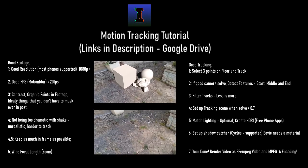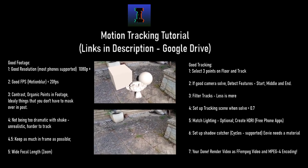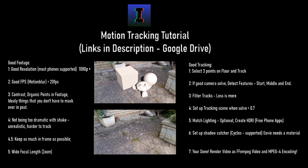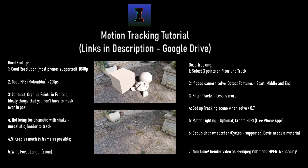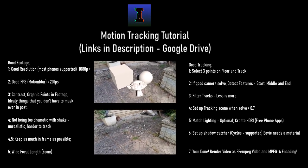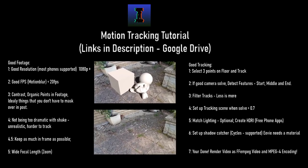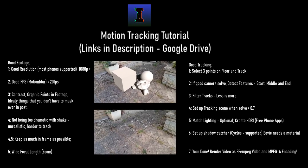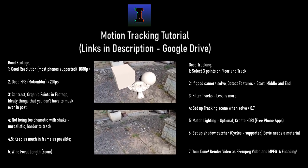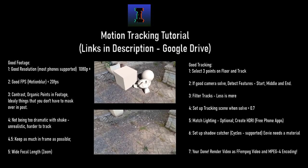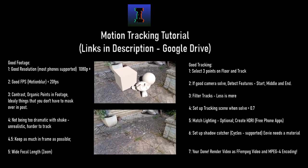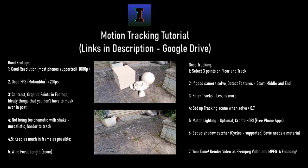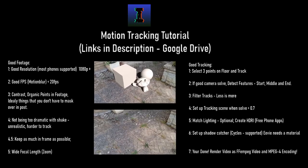Number five is wide focal length — basically zoom. If you zoom in really far with your camera, it's going to be harder to track because you don't have as much perspective, it's probably going to shake more, and there's going to be more motion blur unless you have a 60 FPS expensive DSLR. Use a wide focal length so you can get as much in frame as possible.